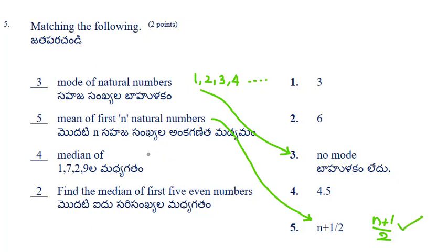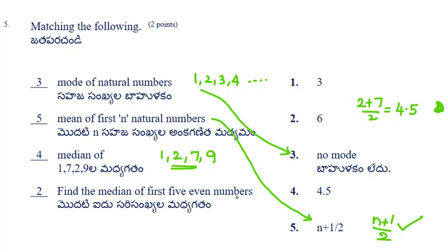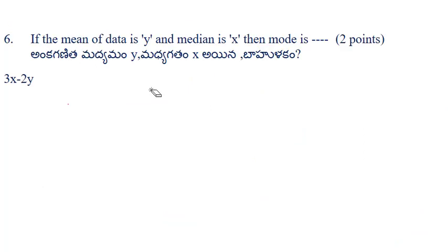To find the median of the given data, write it in ascending order: 1, 2, 7, 9. There are two terms in the middle, so median = (2+7)/2 = 9/2 = 4.5. For the median of the first 5 even numbers: 2, 4, 6, 8, 10 — the median is 6.